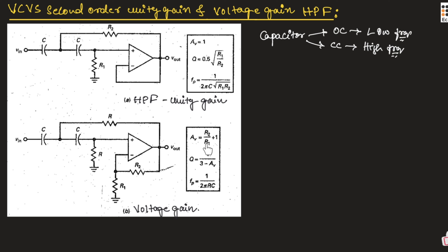For a voltage gain high pass filter, the gain AV is equal to R2 divided by R1, plus 1. The quality factor is equal to 1 divided by (3 minus AV). The pole frequency is equal to 1 divided by 2π RC. Remember all these formulas so they are helpful for solving problems.